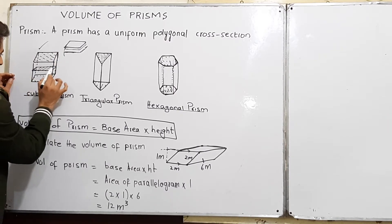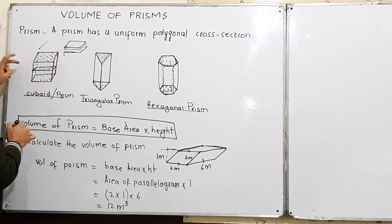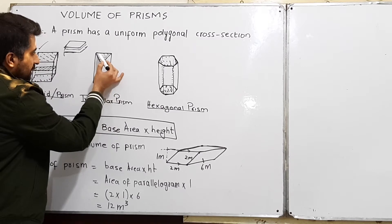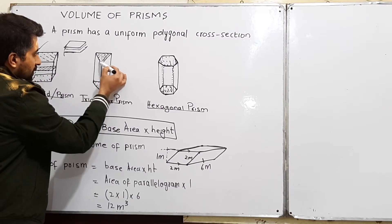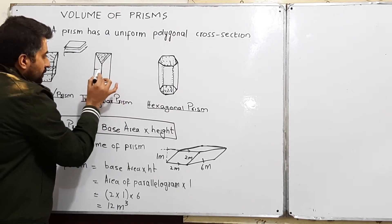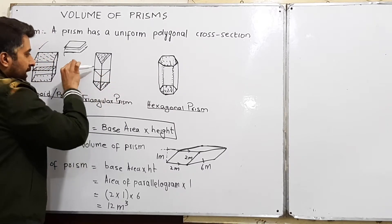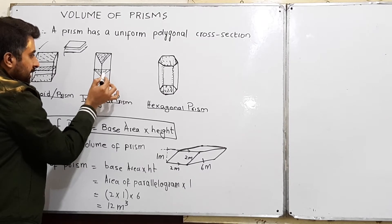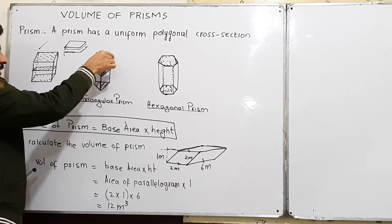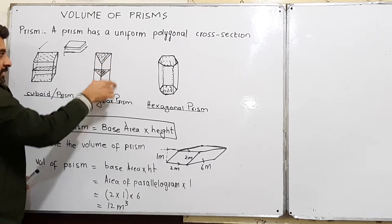This cross section is uniform throughout the height of this cuboid. Take the example of this triangular prism — this is the base, or you may call this the base. Now if you take a cross section from anywhere, if I cut it from anywhere, the shape will be the same at every cross section. So the cross section is uniform throughout the height of this shape.